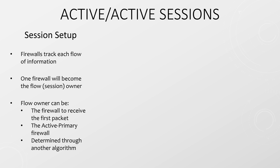However, there are times when we might want to change that. For example, we might want the active-primary firewall to handle all traffic for the purposes of packet capturing or other troubleshooting. We might also use another method to determine which firewall becomes the owner. The two other options are IP Hash, which uses a hash of the source and destination IPs to allocate sessions to the firewalls, or IP Modulo, which uses the parity of the source IP. The firewall that receives the first packet is often the best choice, but if we do that, how can we split the traffic somewhat evenly across the firewalls — how do we prevent all traffic arriving at a single firewall?